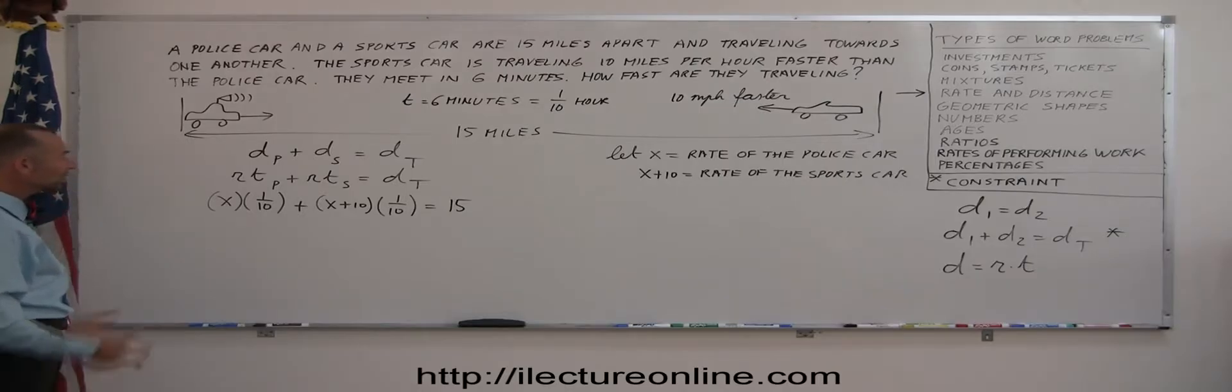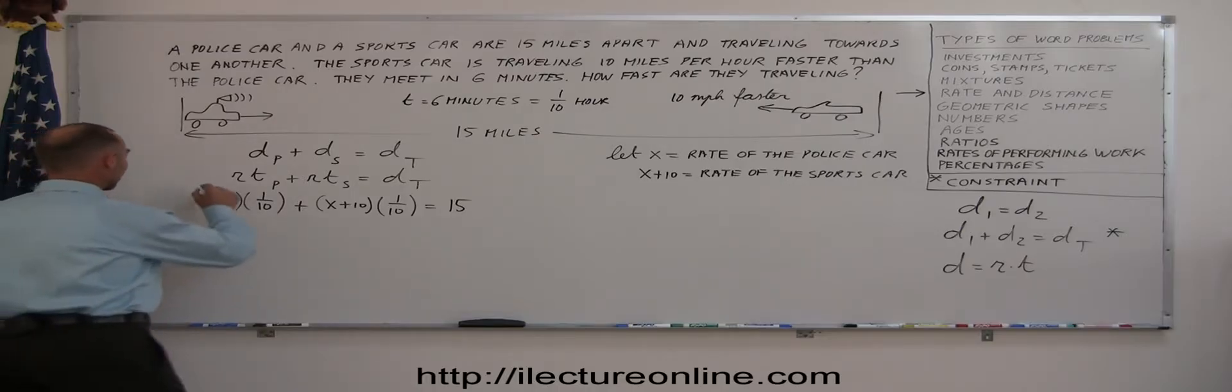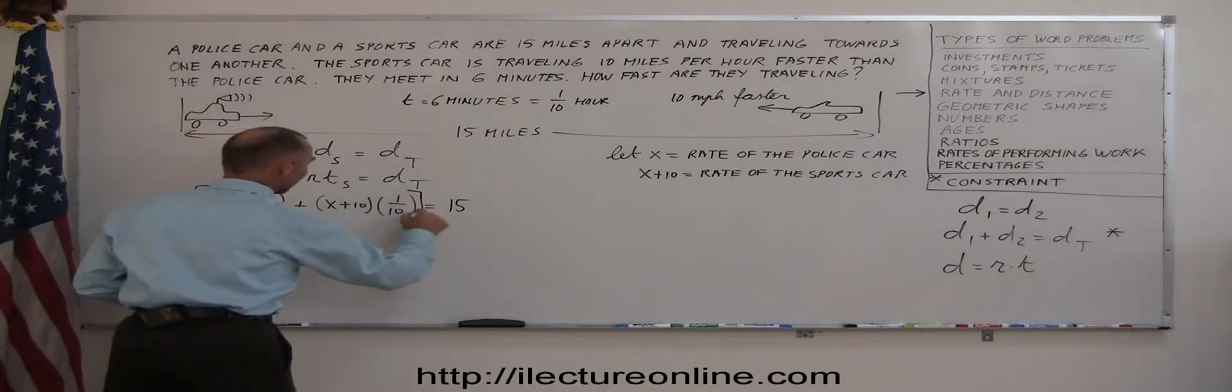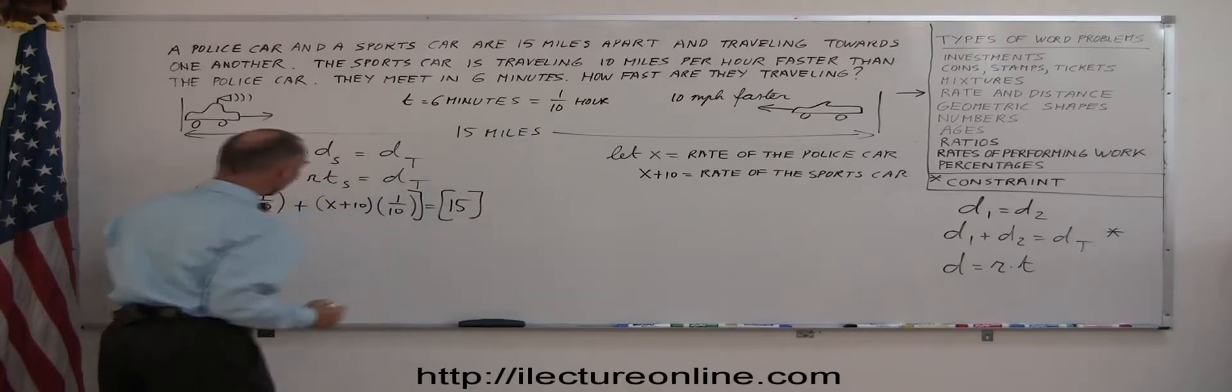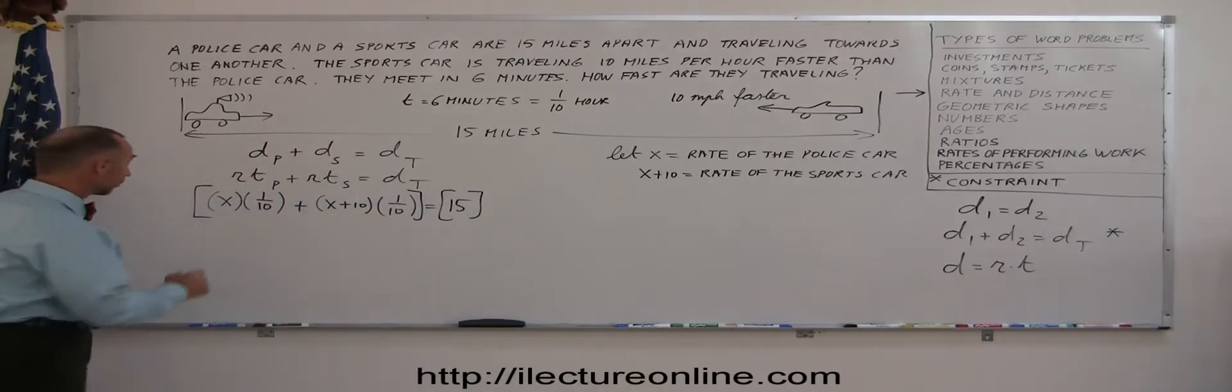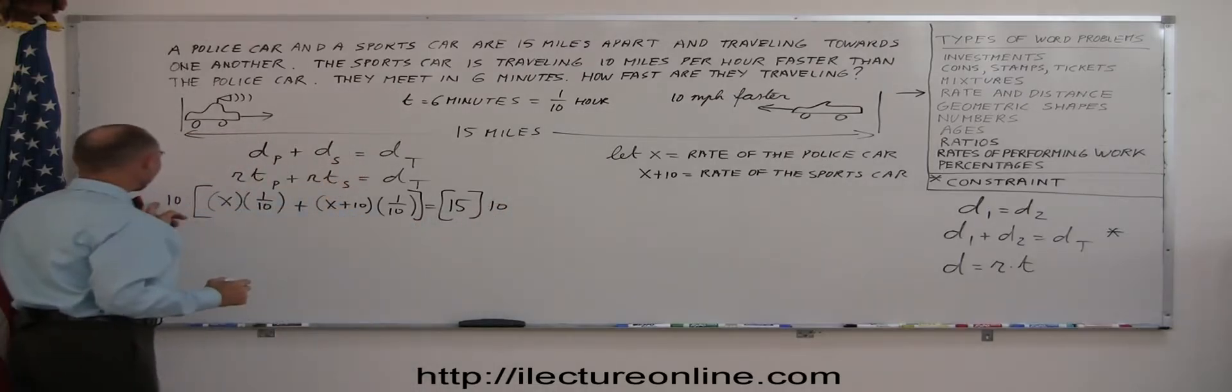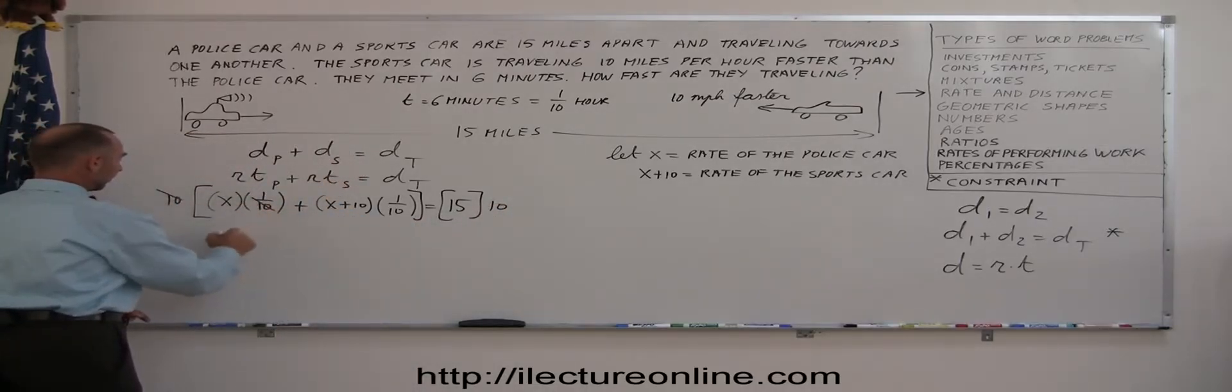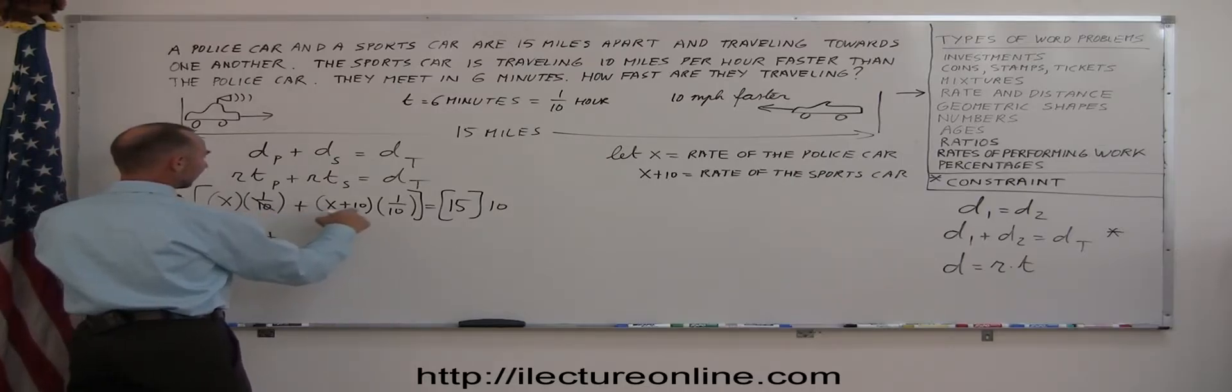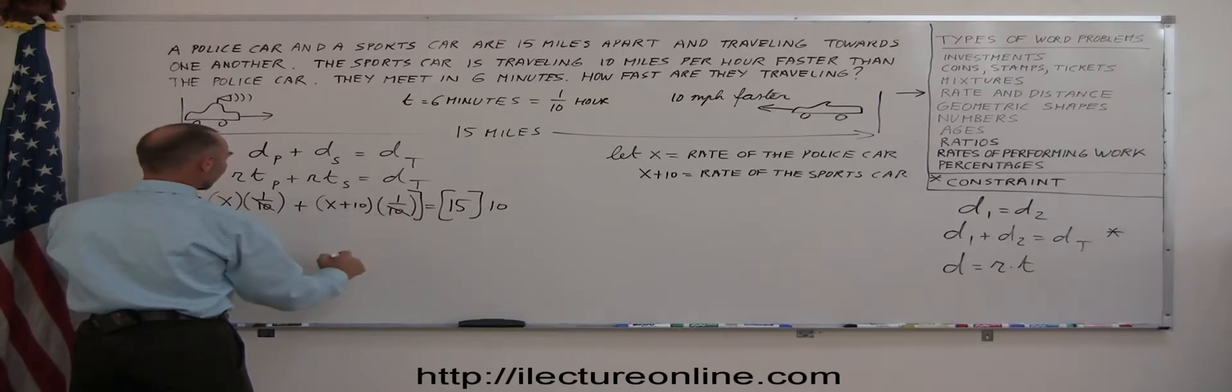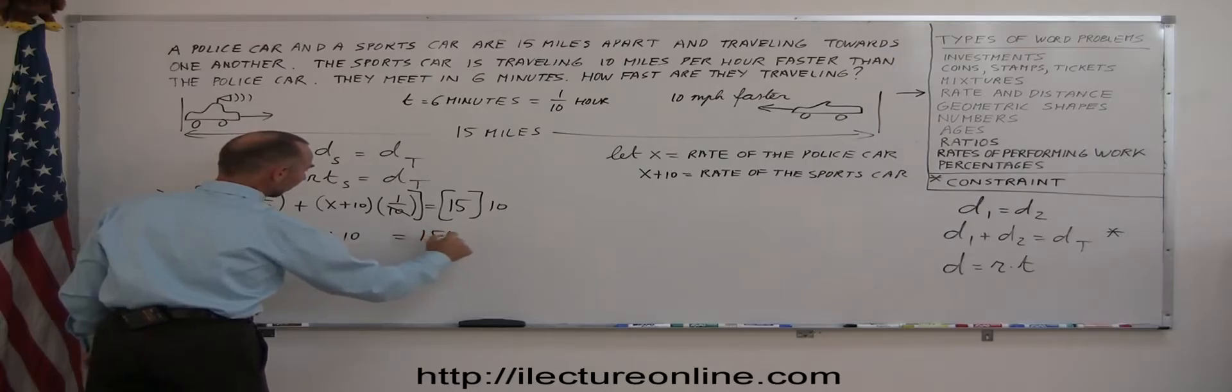All right, now we have our equation and we're ready to solve it. I have fractions in there. So before I go any further, I want to multiply both sides of the equation by a number to get rid of fractions. And since the common denominator here is 10, I'm going to multiply both sides of the equation by 10. So 10 times one-tenth, this cancels out this. So we have x plus 10 times one-tenth, that cancels this one out as well. So we end up with x plus x plus 10, equals 10 times 15, which is 150.